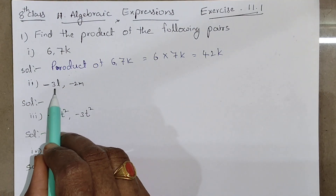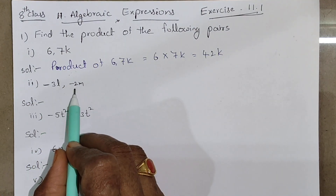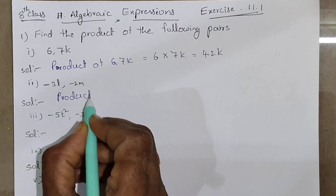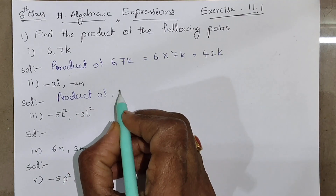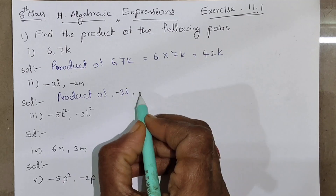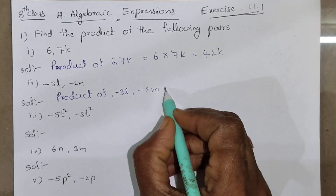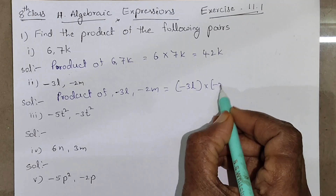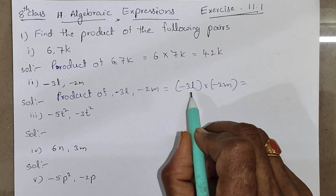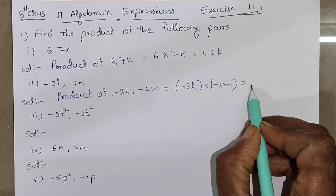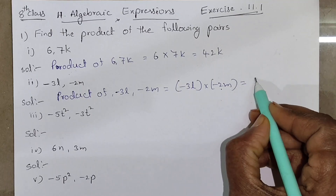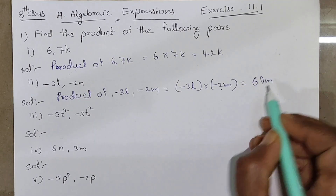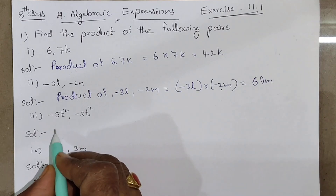Next, second pair: minus 3L and minus 2M. Product of minus 3L and minus 2M is equal to minus 3L into minus 2M. Minus into minus gives plus, so 3 twos are 6 — the answer is 6LM.